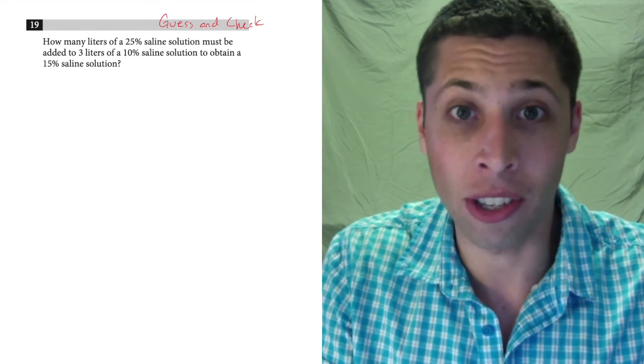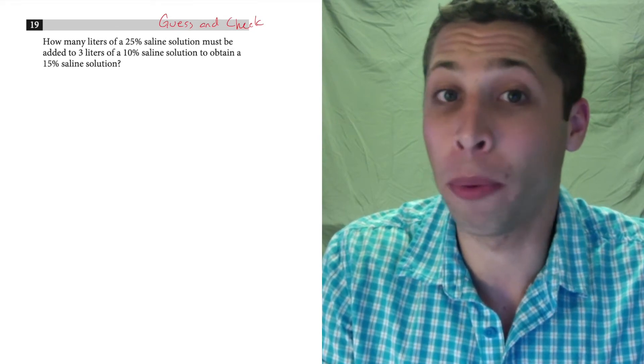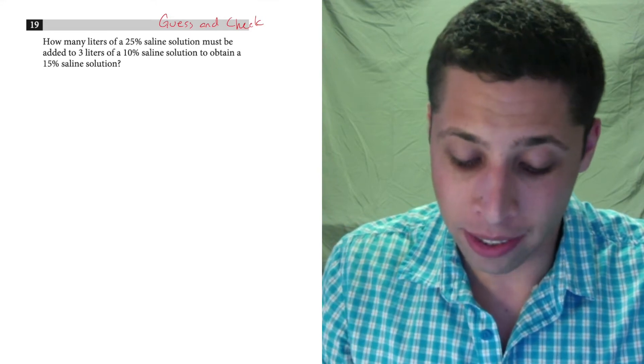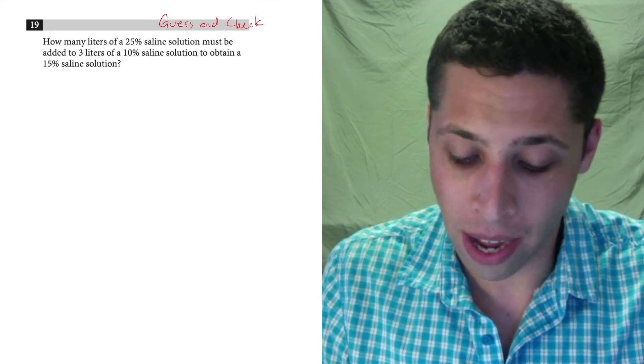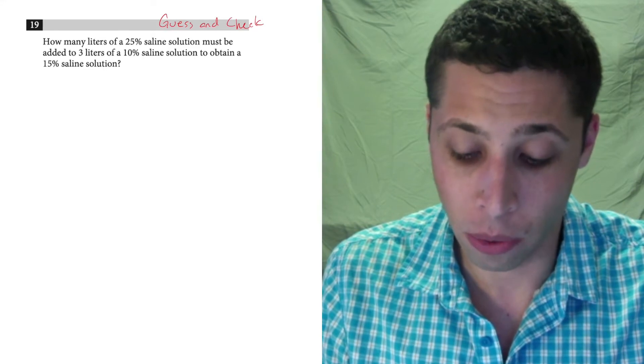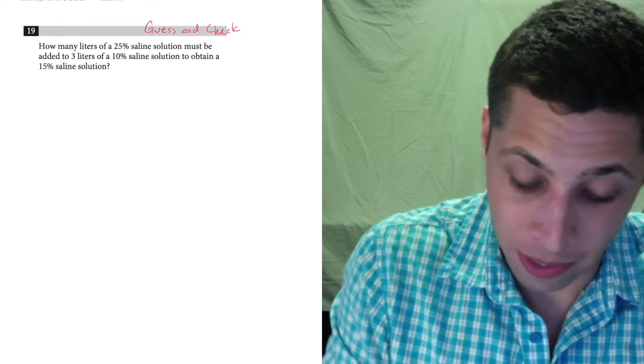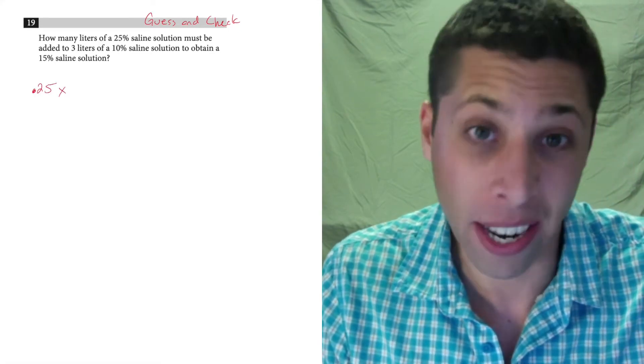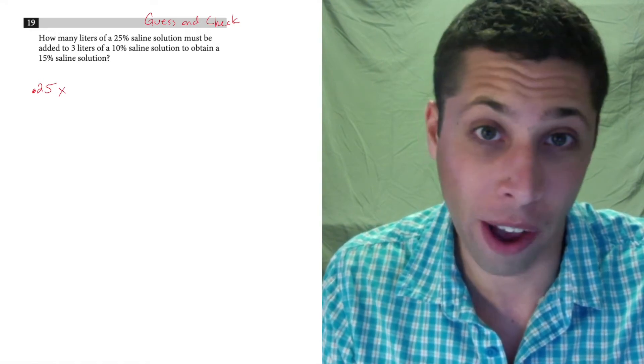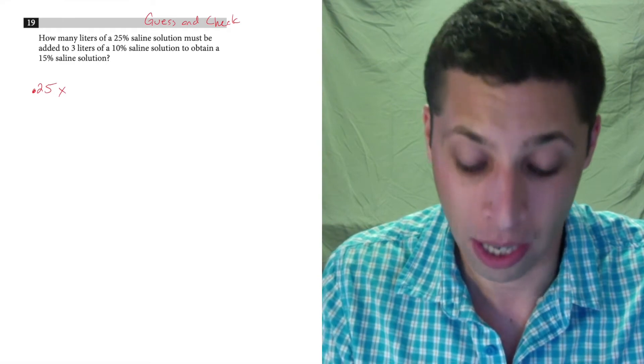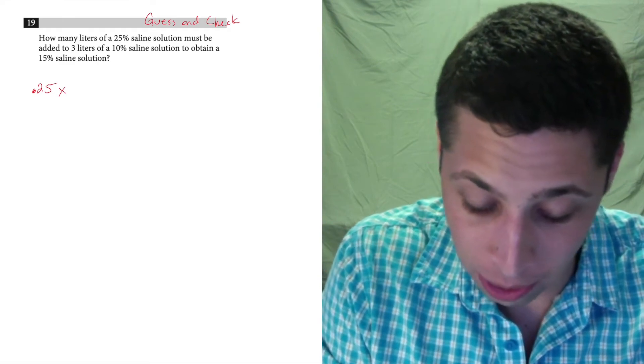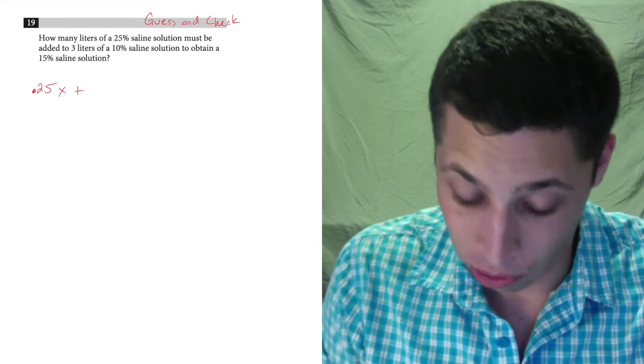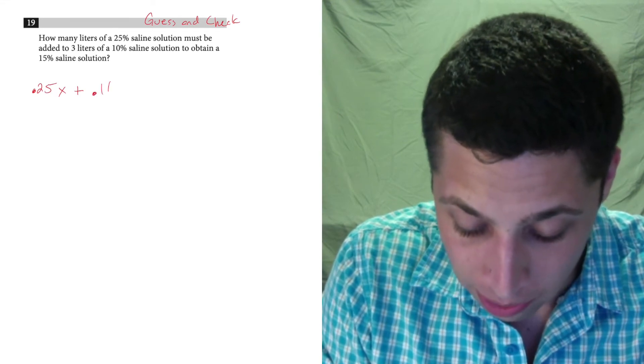What we're going to do is just do what they tell us and hope that we make the right equation. And even that is kind of hard. So when I read this, how many liters of a 25% saline solution? Well, this is a good example where I say, all right, 0.25x. How many x liters of a 25%, I'm just kind of doing what I'm told. Must be added to, well I know that part, that's plus, 3 liters of a 10% saline solution. So okay, 0.1 times 3.